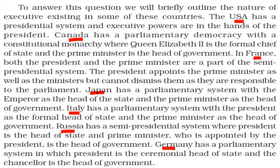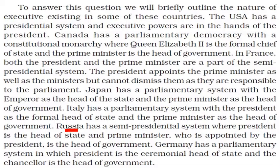In Russia, the president is the head of state and the prime minister — appointed by the president — is the head of government, meaning the prime minister controls the actual administration of the country. Germany has a parliamentary system in which the president is the ceremonial head of state and the chancellor is head of government. These examples illustrate the different roles of the executive in different types of government.